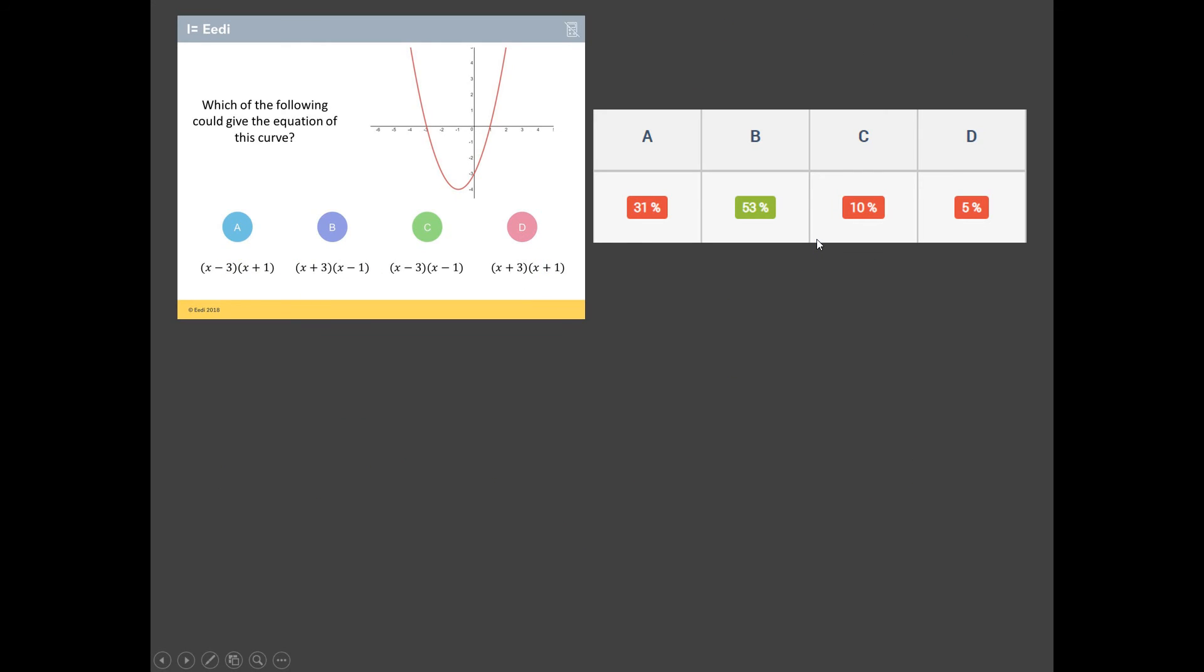So I think B is the right answer to that one. Fortunately, we seem to be right. But look at that. 31% of students have just gone for what we looked at first. Just stick down negative three, stick down one and hope for the best. But it doesn't quite work like that.